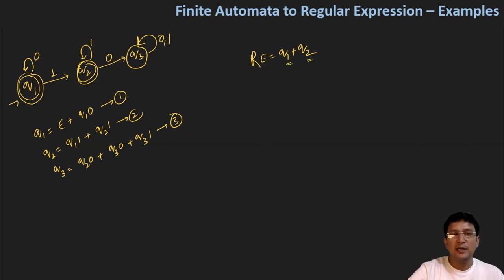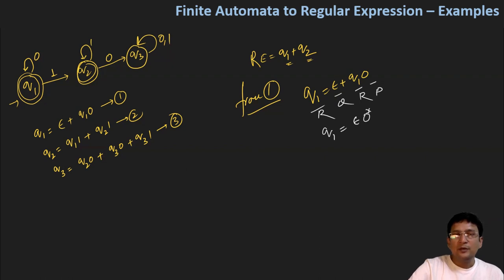From equation number one, Q1 equals epsilon plus Q1*0. We can represent this as Q = R + QP form. Using Arden's theorem, Q = RP*, so Q1 equals epsilon*(0*). Since epsilon concatenated with R results in R, Q1 equals 0*. This is equation number four.